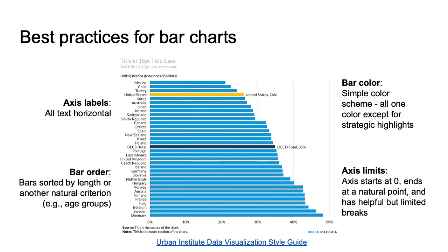Some best practices for a bar chart include having horizontal axis labels so they are easier to read, having bars sorted by length or some other logical order, having a simple color scheme that highlights certain bars strategically, and having an axis that starts at zero and ends at a natural point.